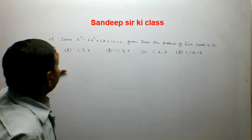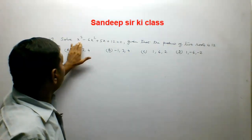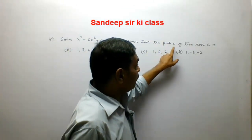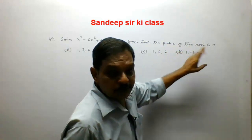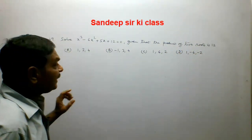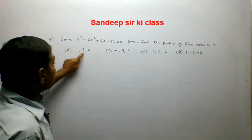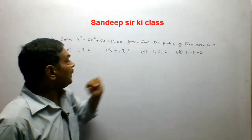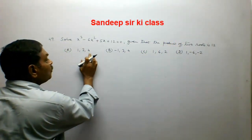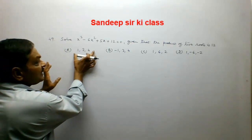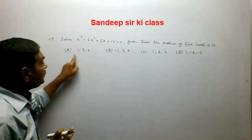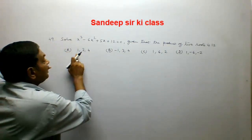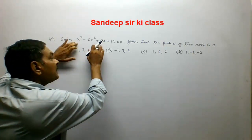Question number 49. Solve x cubed minus 6x squared plus 5x plus 12 equals 0, given that the product of two roots is 12. Four options are given. Option A is 1, 3, 4. The product 3 times 4 equals 12 satisfies the second condition. We will now put these values one by one into the equation.